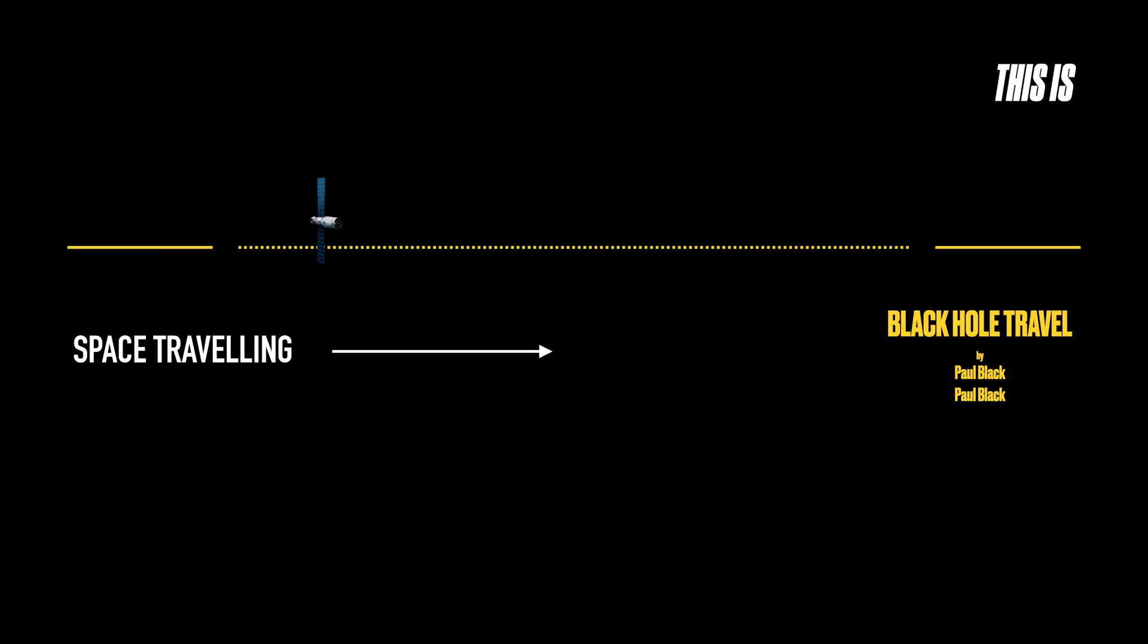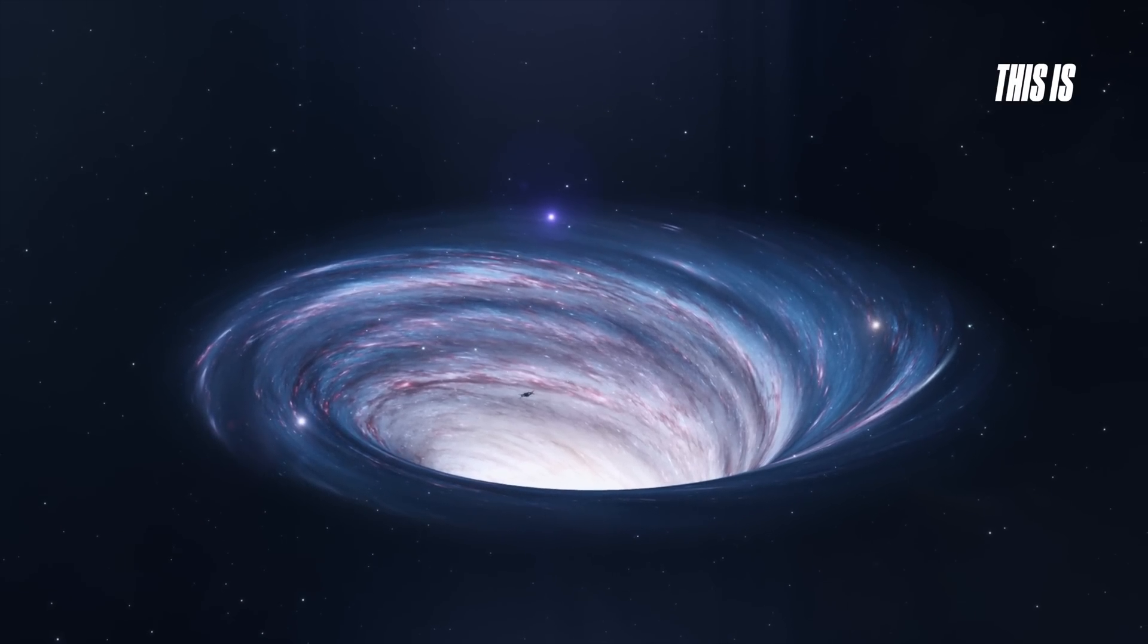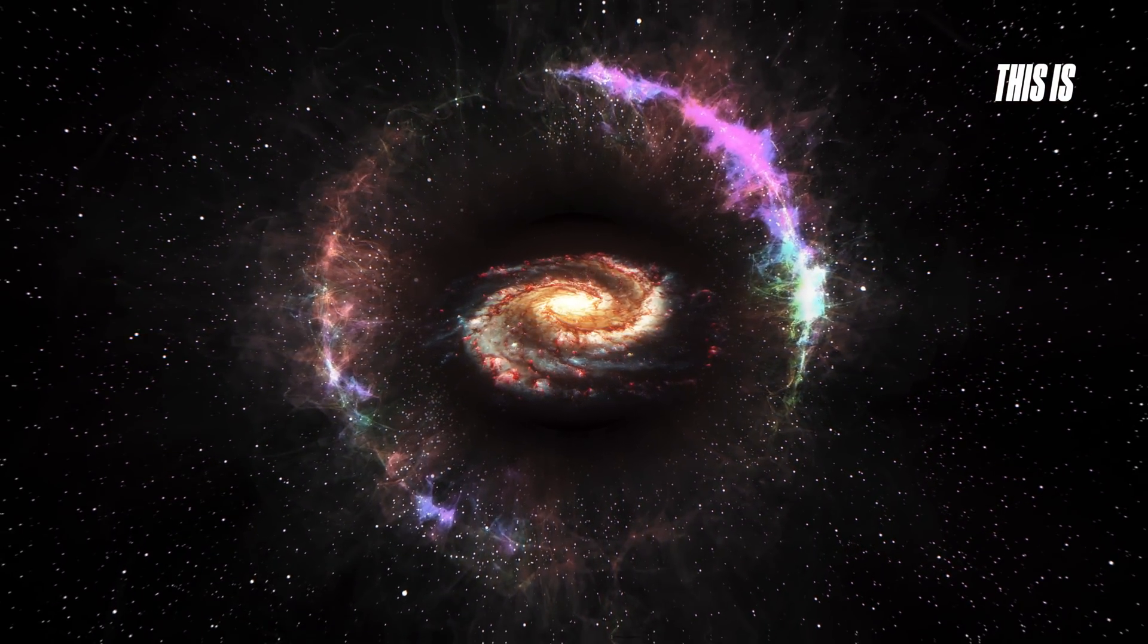Imagine the universe as a sheet of paper. Normally, we would travel from one point to another along the surface. A wormhole, however, would fold the paper, creating a shortcut between two distant locations. This means you could enter a black hole in one part of the universe and instantly emerge somewhere else.